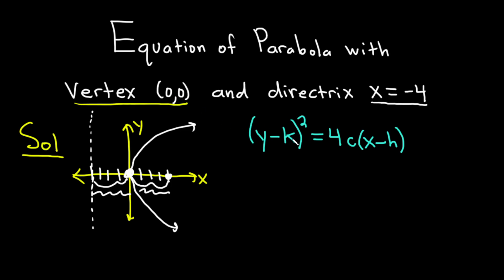Okay, so the vertex is (0,0). So that's our h and our k. So I'll plug those in. So we get y² because y minus 0 is just y. And then we get 4c. And then x minus 0 is just x. And now we just have to find c.